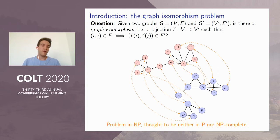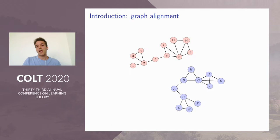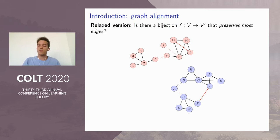If we modify the setting of this problem, then we switch to graph alignment. Here we can tolerate some random noise between these graphs. As you see, some edges can appear, some can disappear. But we're asking the same question in a relaxed version: Is there a bijection f that preserves most edges? In this case, we cannot hope for an isomorphism because the graphs are not isomorphic anymore. But still, we're looking for a bijection that preserves most edges.